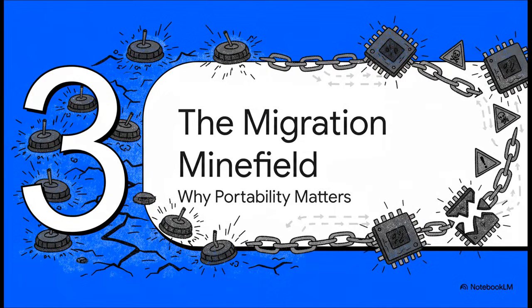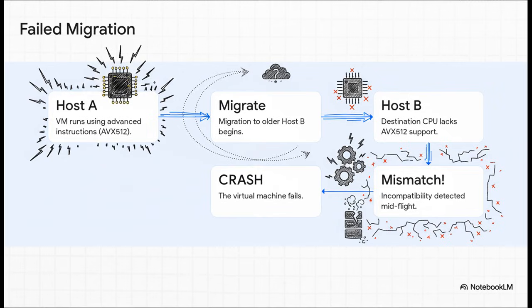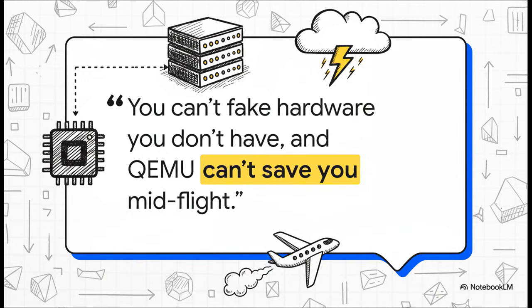I've mentioned portability and migration a few times, so let's really talk about why this is so critical. A slow VM is annoying, but a dead one is a disaster. Nothing will kill a VM faster than wandering into the live migration minefield with the wrong CPU type. Picture this: your VM is running happily on host A, a powerful new server, using a fancy feature like AVX-512. You decide to live migrate it to host B, maybe a slightly older machine. Mid-flight, the system suddenly realizes the destination's CPU doesn't have that hardware — the VM is actively trying to use an instruction that literally does not exist on the new host. The result? Incompatibility detected, VM crashes, and you might even have data corruption. Virtualization is amazing, but it isn't magic. QEMU, the technology under the hood, can't just invent hardware capabilities that aren't physically there, especially in the middle of a live migration. If you're building for high availability, this is a lesson you really don't want to learn the hard way.